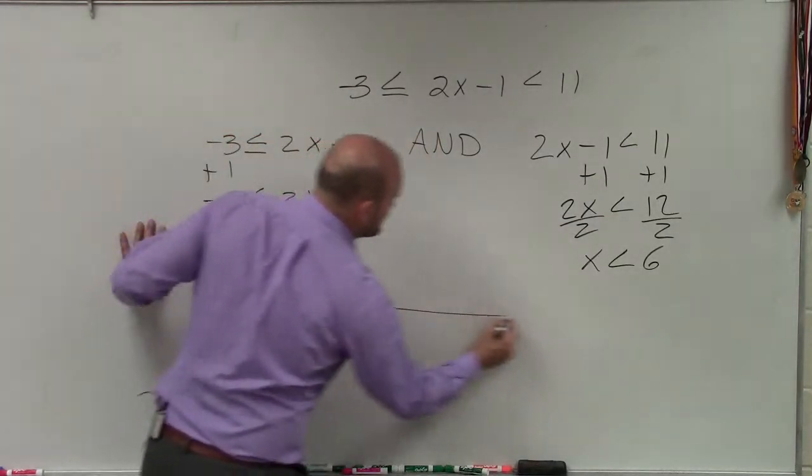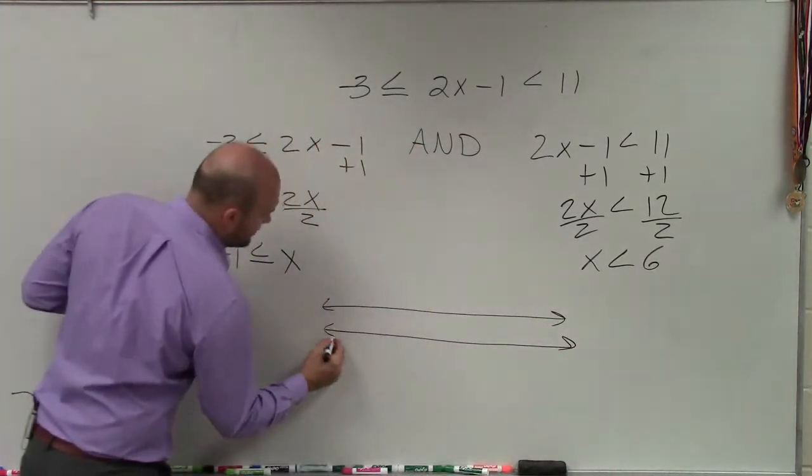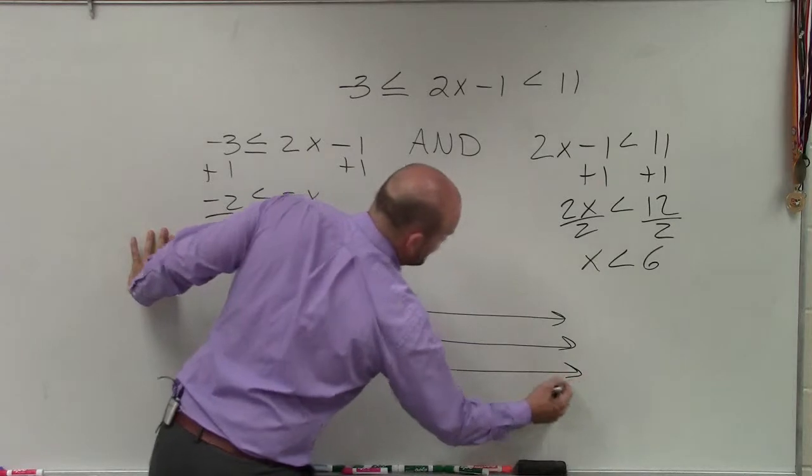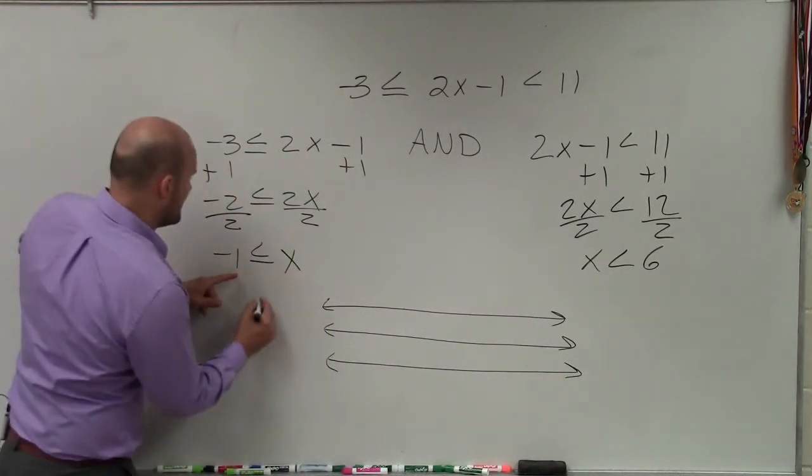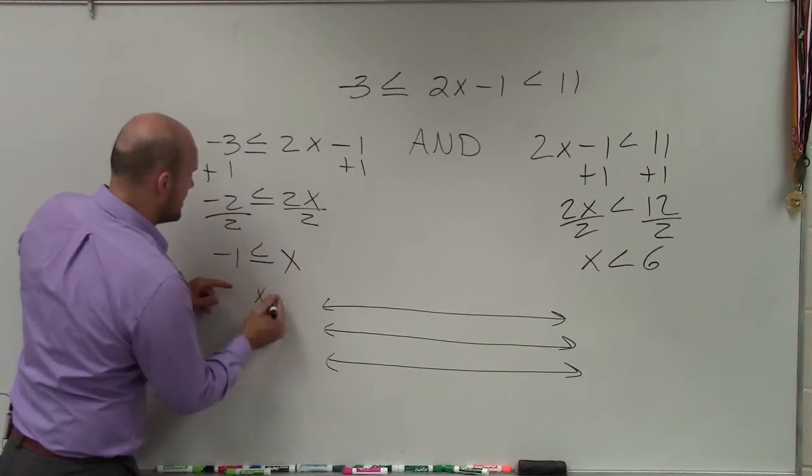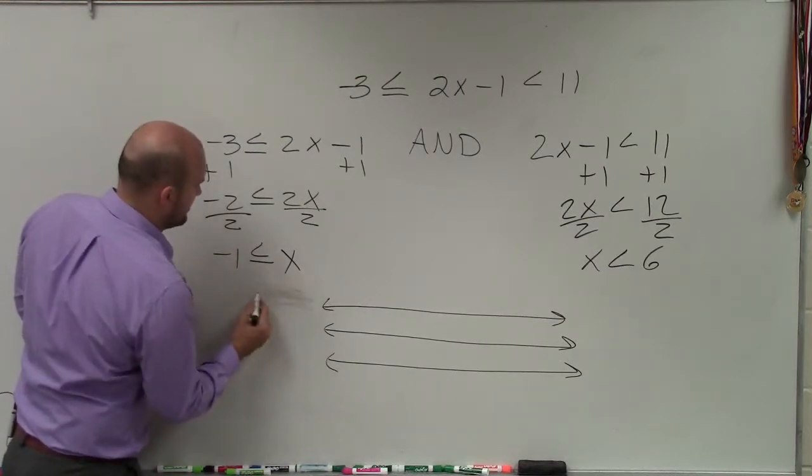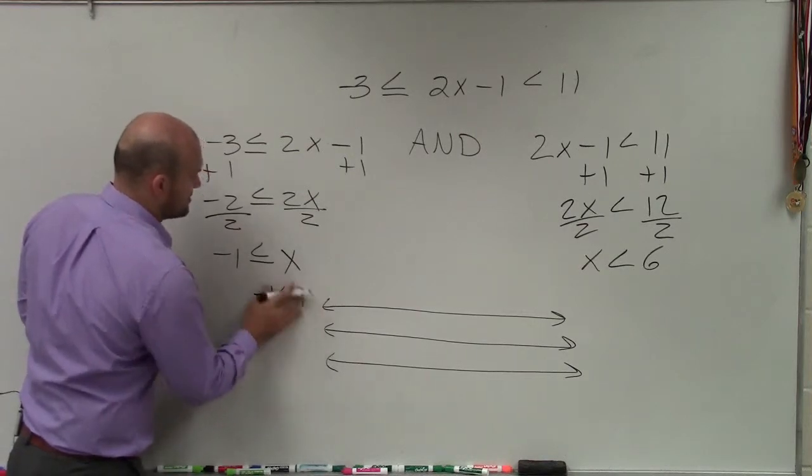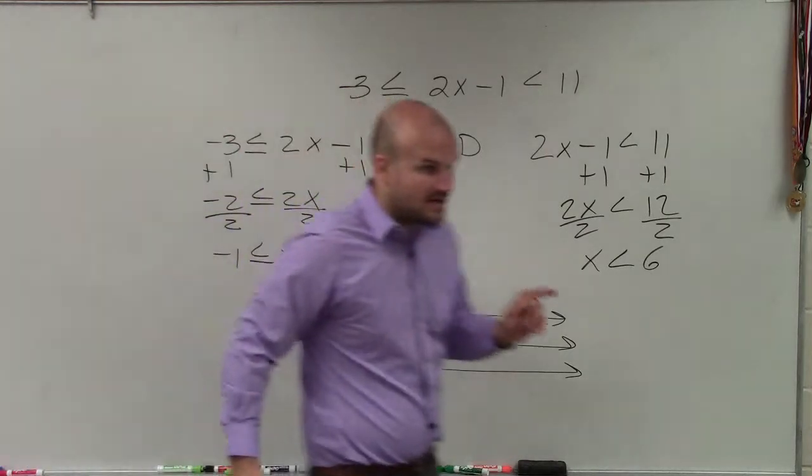So the reason why I recommend doing three separate graphs is to solve and graph each one individually. So let's graph x is greater than or equal to -1. Actually, I'll just write it like this: -1 ≤ x. So this pretty much says x is greater than or equal to -1. Does everybody agree with that?